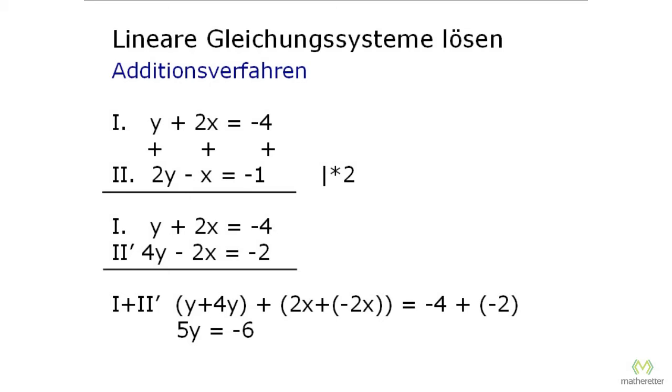We can also take away 0, so that's now equal to minus 6. And to get the 5 away, we divide by 5 on both sides. And then y equals minus 6 fifths. And 6 divided by 5 is 1.2. That's our result for y.